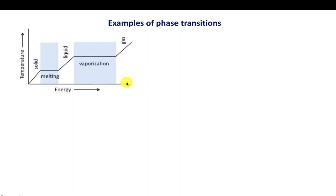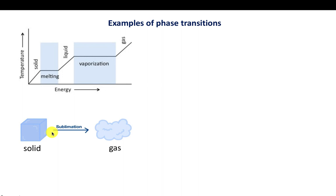It's also possible that a solid directly becomes a gas — this is called sublimation. For example, carbon dioxide when very cold becomes a solid, but as soon as you heat it, it doesn't become a liquid at ordinary pressures; it goes directly from solid to gas.